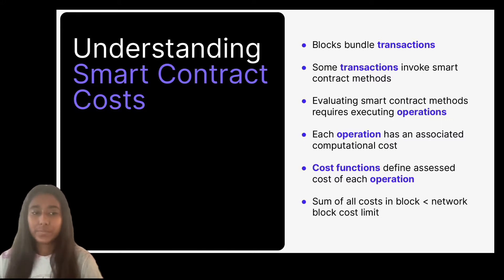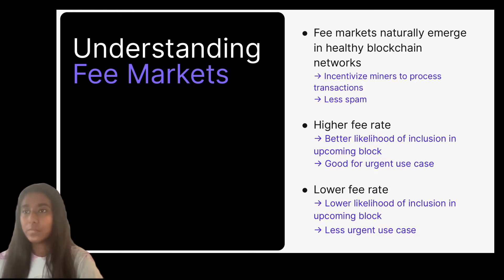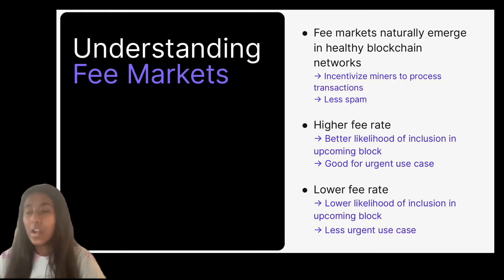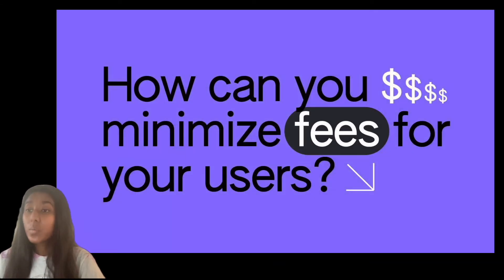This is where fees come in. Fee markets naturally emerge in healthy blockchain networks due to demand for block space, which is limited. They incentivize miners to process and include transactions in blocks, and they also reduce the occurrence of spam transactions. Users have the option to pay higher or lower fee rates based on the time sensitivity and urgency of their use case. For example, in a popular NFT mint, users may bid higher fees to ensure their mint is mined in the next block before the collection mints out. For less time-sensitive transactions, users may be willing to wait until the network is less congested in order to pay lower fees. You can think of this like Uber surge pricing — as demand goes up, so do fares.